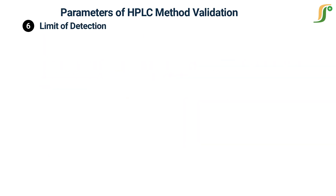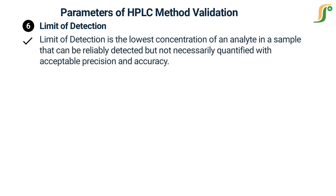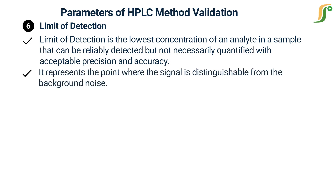The sixth parameter is limit of detection. Limit of detection is the lowest concentration of an analyte in a sample that can be reliably detected but not necessarily quantified with acceptable precision and accuracy. It represents the point where the signal is distinguishable from the background noise.